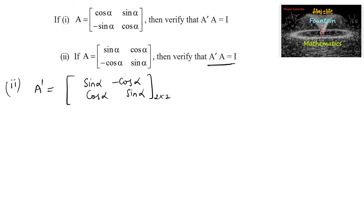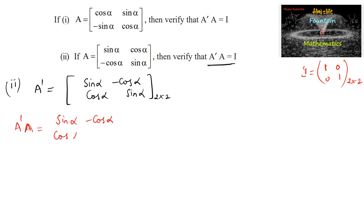Here also we shall consider an identity matrix of order 2 by 2: 1, 0, 0, 1. Now consider A dash into A: that is sin alpha, minus cos alpha, cos alpha, and sin alpha — into matrix A which is sin alpha, cos alpha, and minus cos alpha and sin alpha.